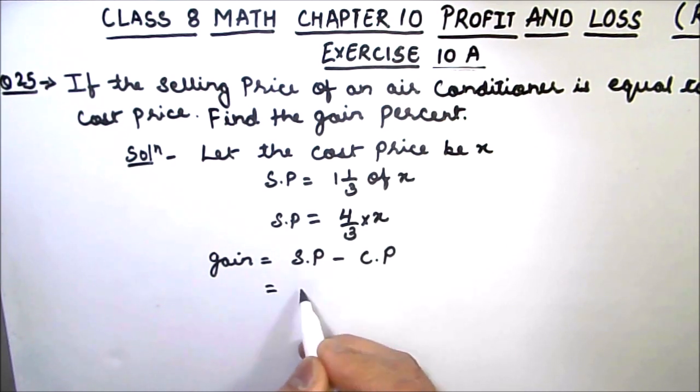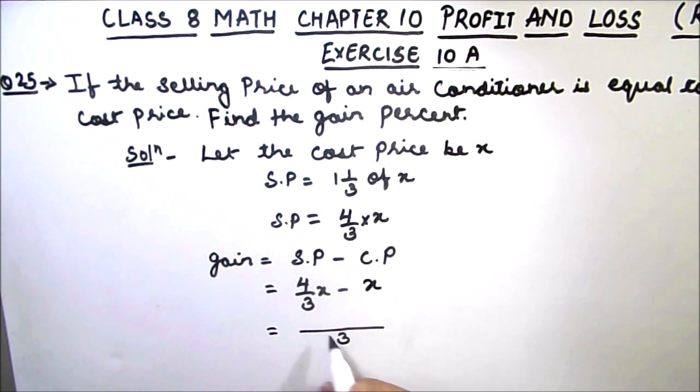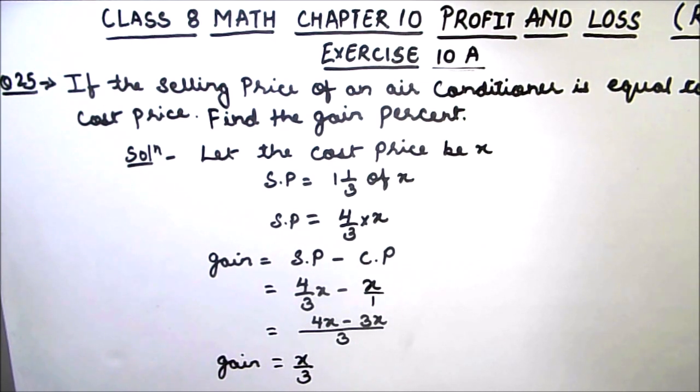So selling price is 4/3 of x minus cost price is x. We will take the LCM here, so 3 is the LCM. 4x minus 3x, this will be 1, is equal to x/3. So gain is x/3.